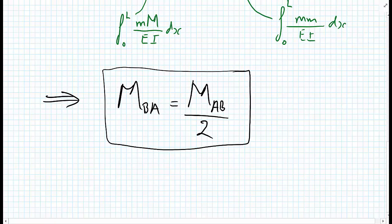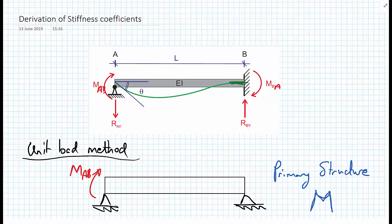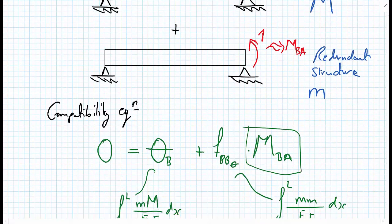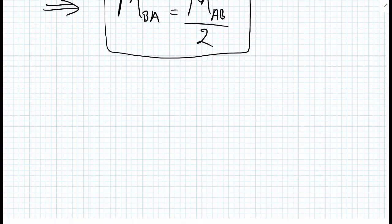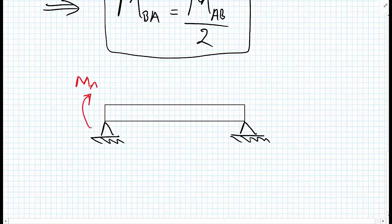At this point, having found that the moment on the right-hand side equals half the moment applied on the left-hand side, we can go back to our original propped cantilever — which is indeterminate — and redraw it as a simply supported beam where we have moment MAB applied on the left-hand side and moment MAB divided by 2 applied on the right-hand side. This is now a statically determinate system we can solve.